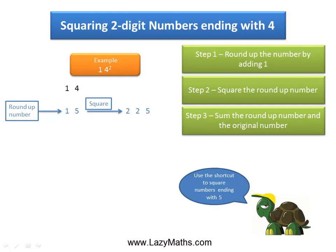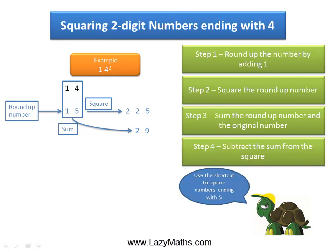The next step is to add 14 and 15 together: 14 plus 15 is 29. Finally, we subtract 29 from 225.